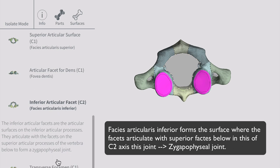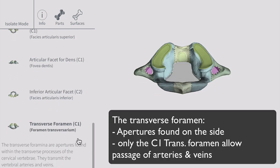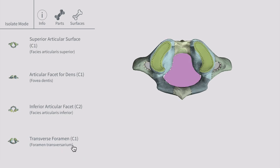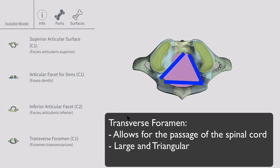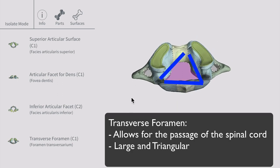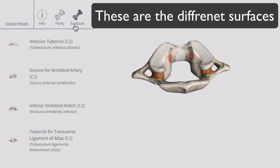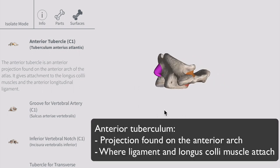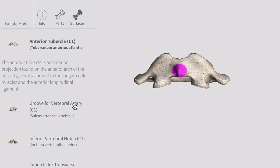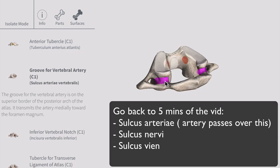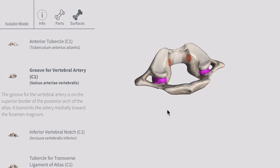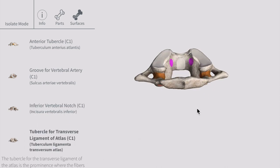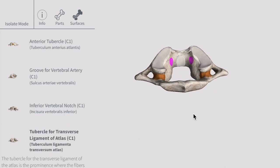Parts and surfaces of C1: the anterior arch joins with the posterior arch to make a circle, with the dens axis on the posterior side. The posterior tubercle is where the rectus capitis minor, a back muscle, attaches. Muscles of the neck involved in rotation of the head attach to the transverse process. The superior articular surface is where the occipital condyles attach, and the fovea dentis is found on the posterior side of the anterior arch. The transverse foramen is the aperture found on the side, allowing passage of veins and arteries. There is also a groove — sulcus arteriae or sulcus nervi — through which arteries and veins travel after exiting the foramen, passing into the foramen magnum.